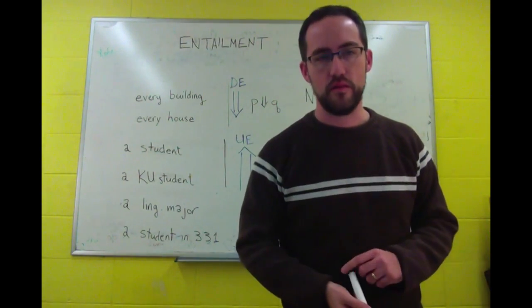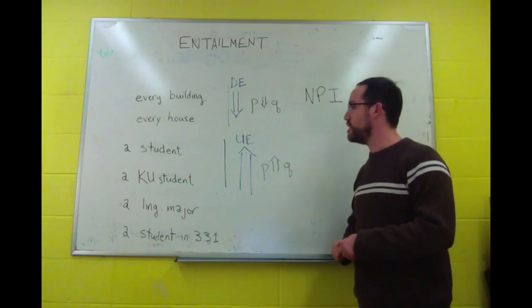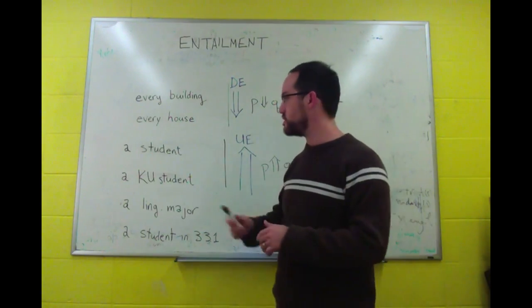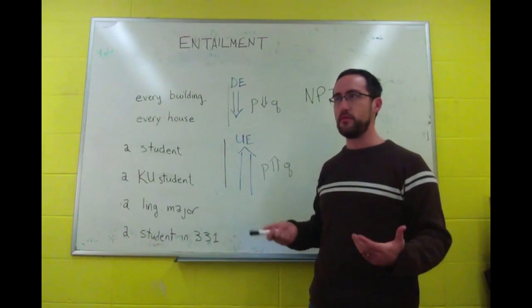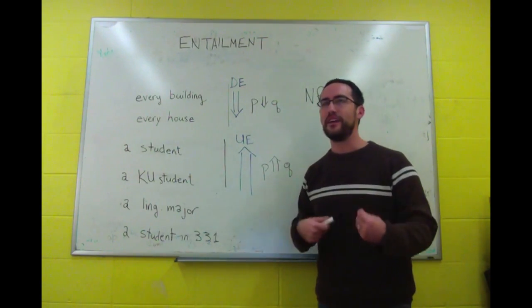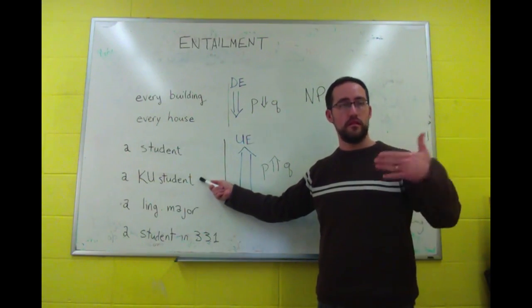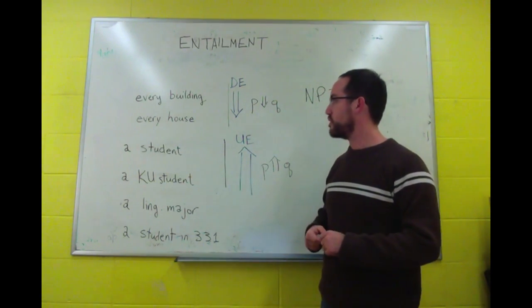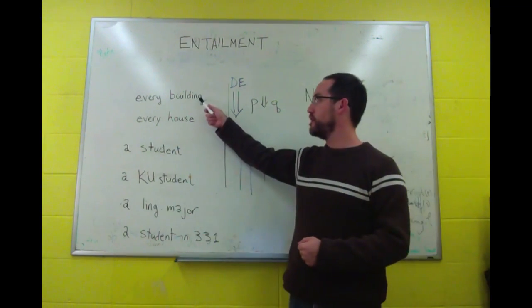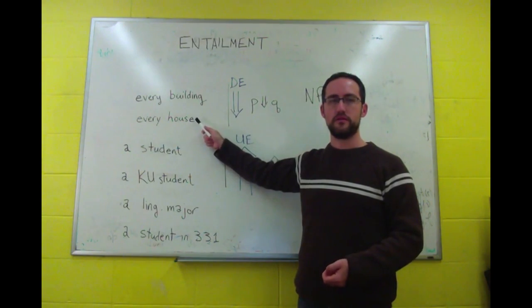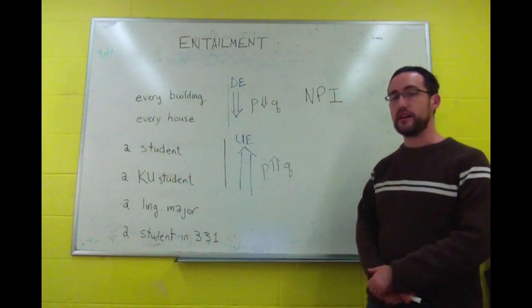If clauses are also downward entailing. So if I say, if you see a student, tell me. Well, okay, any time you would tell me would be a time you saw a student. That entails that if you see a KU student, tell me, because they're a student too. If you go into a building, tell me. That will include if you go into a house. So these are all downward entailing contexts, and they license NPIs.